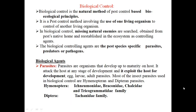After chemical control, the next topic in our syllabus is biological control. Biological control is the natural method of pest control and is based on bioecological principles. The aim of biological control is the eradication, reduction, or suppression of pest population by using another living organism. When we use another living organism for the control of pests, that is called biological control.